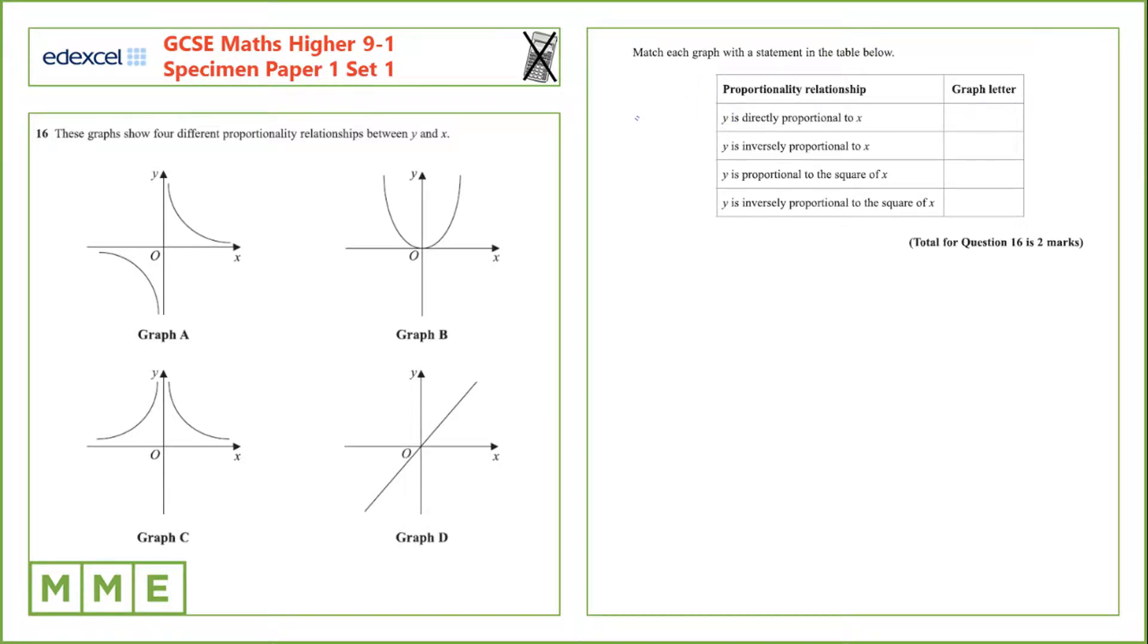y is directly proportional to x is a graph of the form y equals kx. So that's a linear graph. The only linear graph here is D.